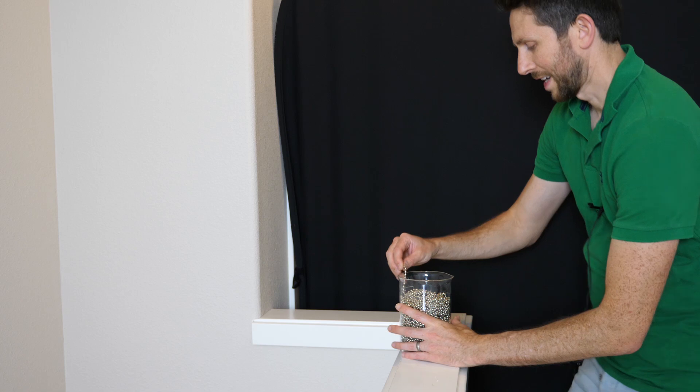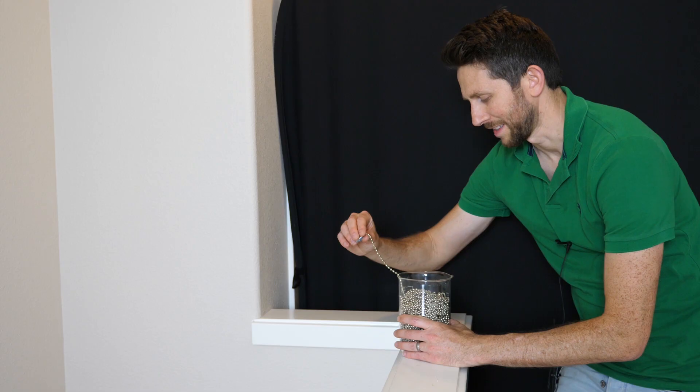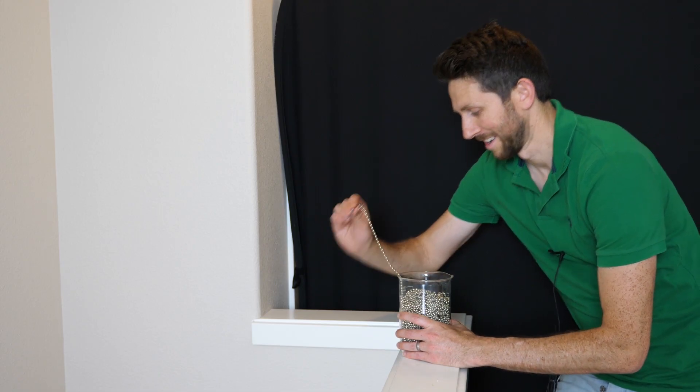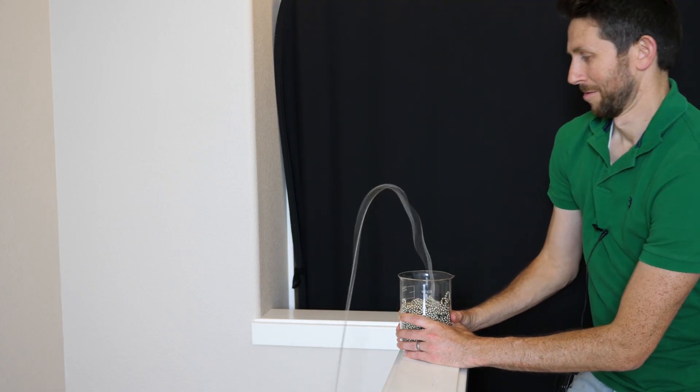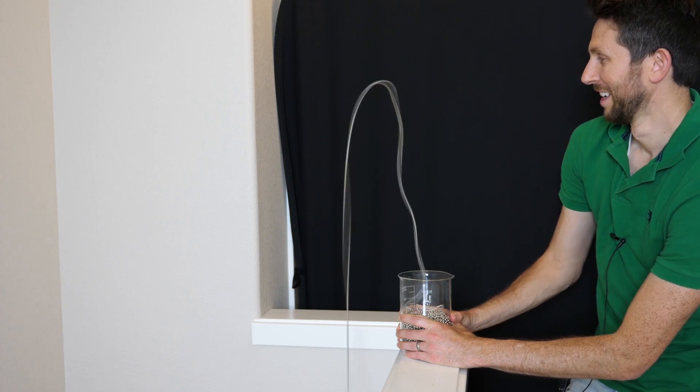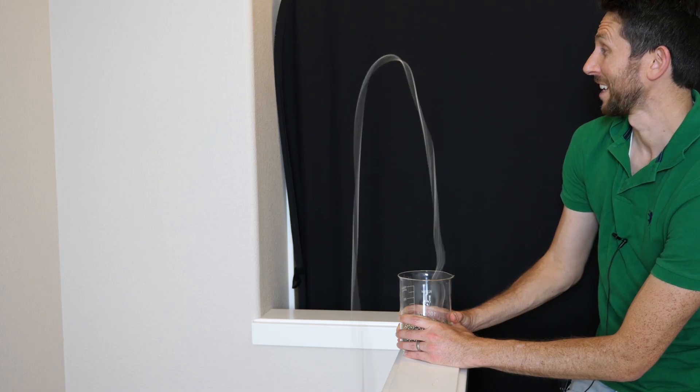What's weird about this physics demonstration is it defies all of the previously known physics of chains falling. According to those theories and the theories of momentum and impulse on chains falling, the chain shouldn't rise up above the rim, but it technically should just go over the rim and fall down. Why is it that the chain is getting pulled up over the rim? How is it lifting up above it?